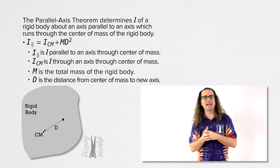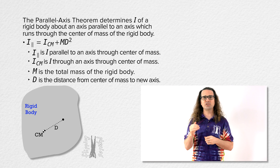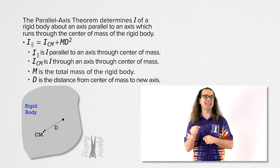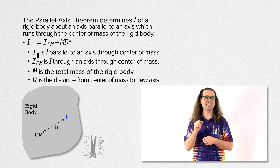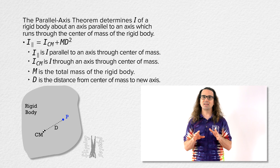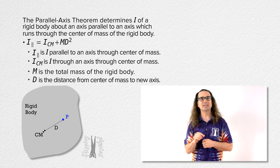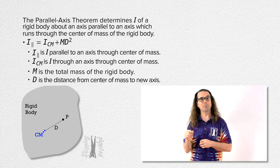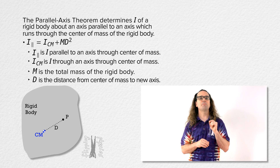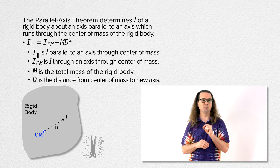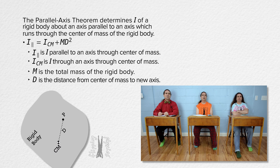In order to prove the parallel axis theorem, let's begin with a rigid object with some shape and determine its rotational inertia about an axis which is perpendicular to the screen and passes through point P, a point which is not at its center of mass. The center of mass of the rigid body is labeled capital CM, and we are going to rotate the object around an axis which is perpendicular to the screen and passes through point capital P.